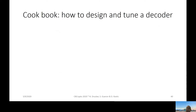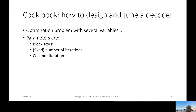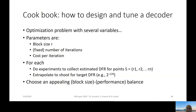Here is a cookbook for how to design and tune a decoder. This is an optimization problem with several variables: the block size, the fixed number of iterations, and the cost of an iteration for that decoder. For every set of these three parameters, you need to run all experiments to collect the DFR on a set of points. After collecting this, you extrapolate and shoot for the target DFR to get a design. Then across all these designs you choose an appealing block size versus performance balance. All you need is a lot of patience and many CPU hours.